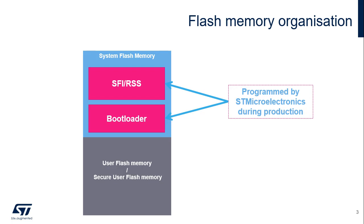For further details, refer to the application note STM32 Microcontroller's System Memory Boot Mode, or AN2606. System memory from which the CPU2, Cortex-M0 Plus, boots in system memory boot mode. This area is reserved and contains the SFI-RSS firmware used to authenticate and install the firmware in flash memory through one of the following interfaces: